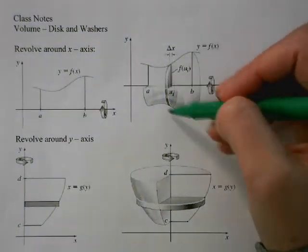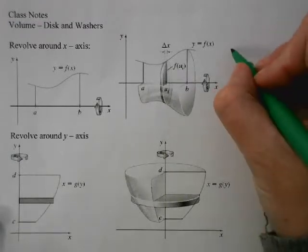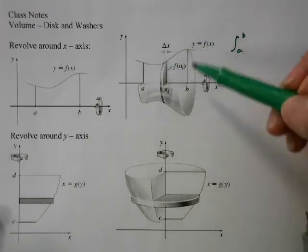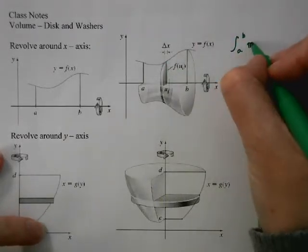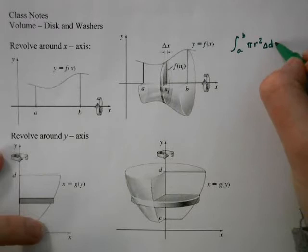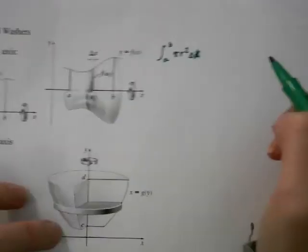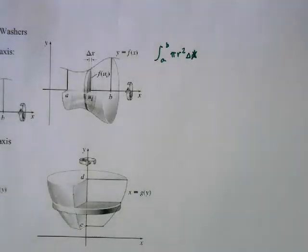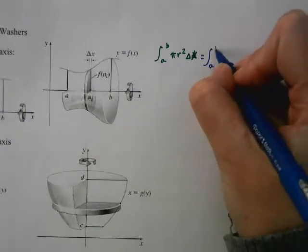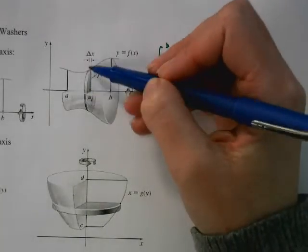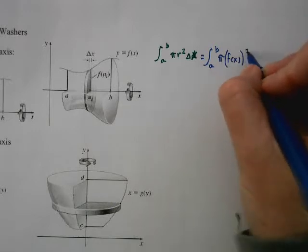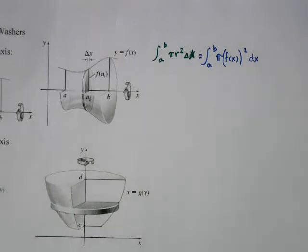So we have a disc. We're going to have the integral from a to b — going from all the discs from here to here — of pi r squared times the height of the disc, which is delta x, or dx. This becomes the integral from a to b of pi times f(x) squared dx, since the radius of the circle is whatever the y value, f(x), is.